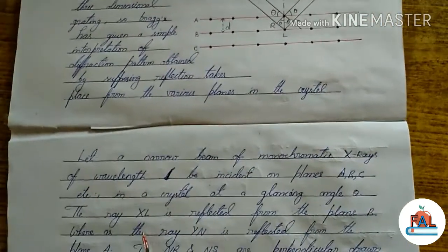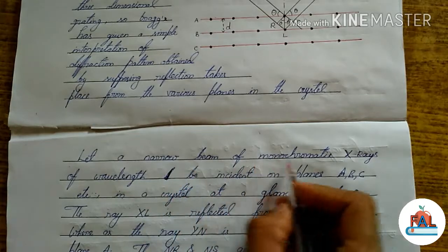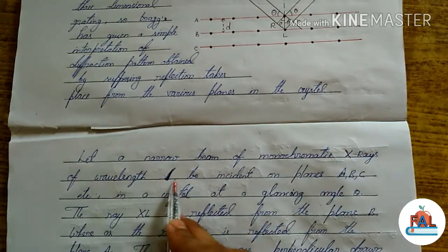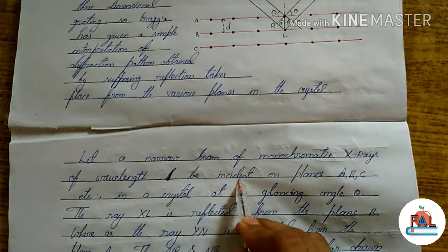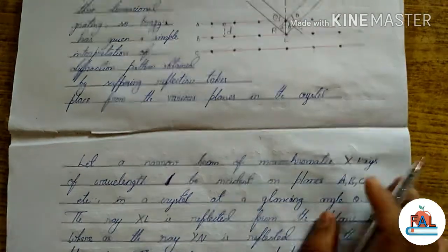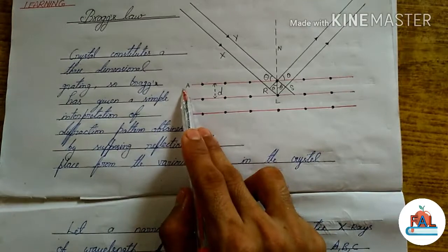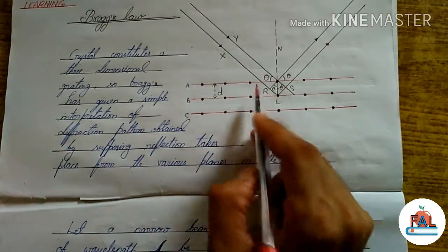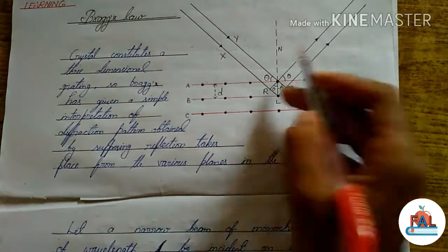Now let's understand the figure. Let a narrow beam of monochromatic X-rays of wavelength lambda be incident on planes A, B and C. These are the two X-rays X and Y. They are falling on these planes and reflecting from them.